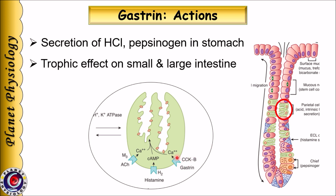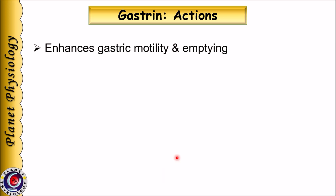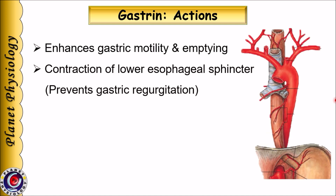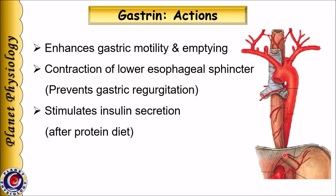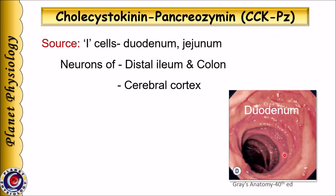Gastrin also has a trophic action on the intestine — that is, it stimulates growth of gastrointestinal mucosa. Other actions include increase in gastric motility as well as gastric emptying, contraction of the lower esophageal sphincter (which helps to prevent gastric regurgitation), and stimulation of insulin secretion, especially after a protein diet.